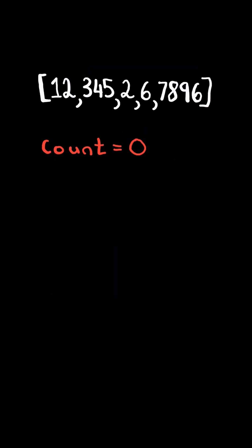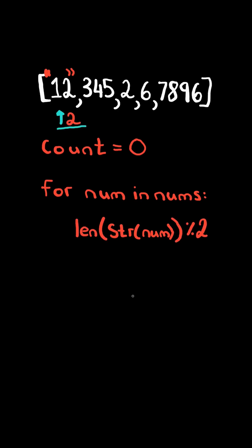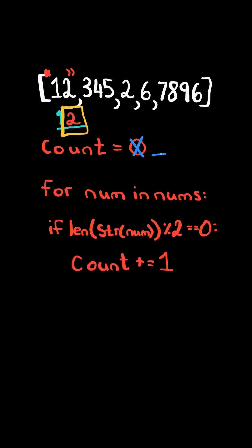First, we initialize a count to zero. We then iterate through the array. We then convert the number to a string. We get the length of the string, and mod it by two. And if it equals to zero, then the count of digits is even. And so we increment count.